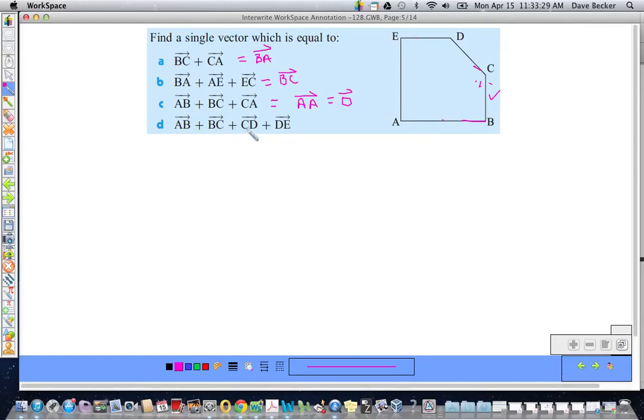Okay. AB plus BC plus CD plus DE. Again, the letters all match in between. So, I can immediately write AE.